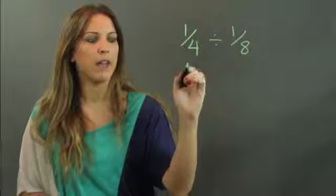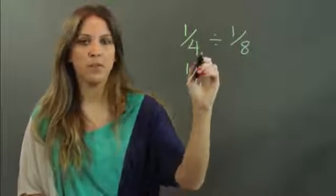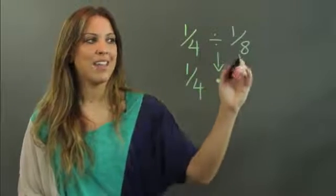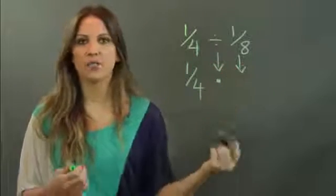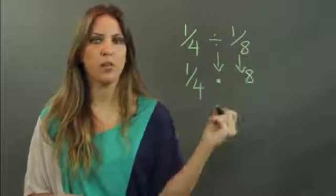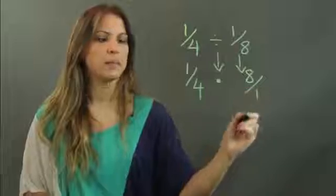So I know that if I'm dividing fractions, what I do is keep the first one, change the division to multiplication, and then change the last fraction to its reciprocal, which just means to flip it around so the denominator becomes the numerator and the numerator becomes the denominator.